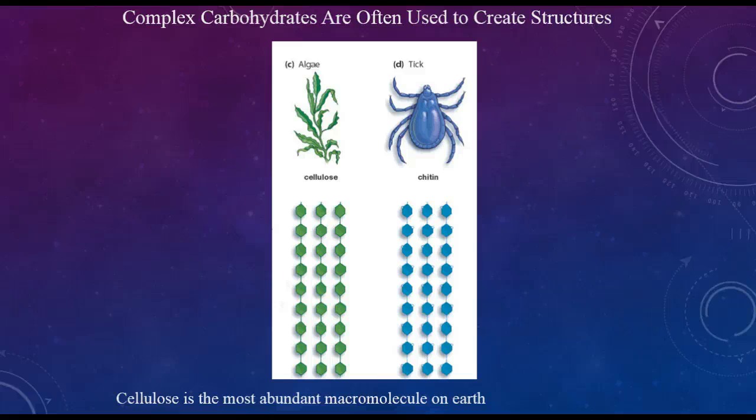Ticks also have a complex carbohydrate structure on the outside that protects the tick. That tough, protective layer is called chitin, which is a complex carbohydrate.